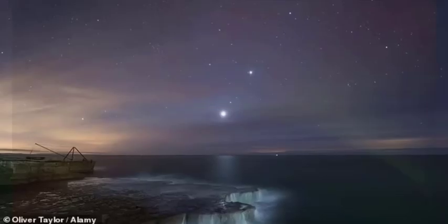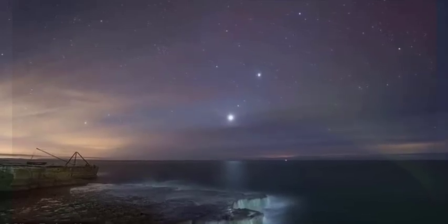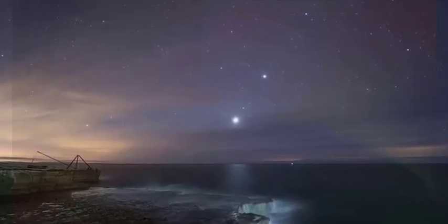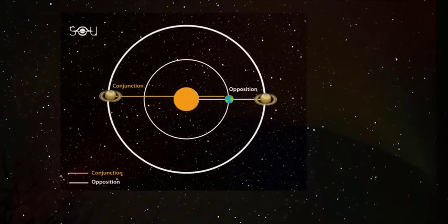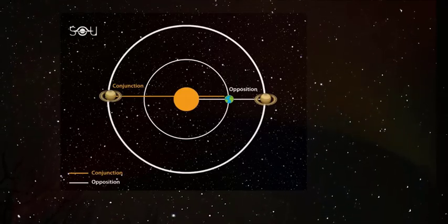A planet parade was last visible from the UK in June, when it was also joined by a crescent moon. The five planets visible to the naked eye all appeared in the order of their distance from the sun, a lineup that had not been seen for 18 years.